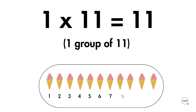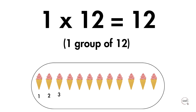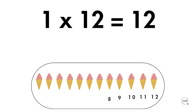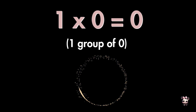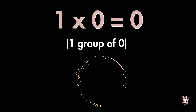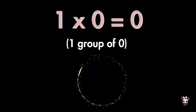1 group of 11 is 11. 1 group of 12 ice creams is 12. 1 group of 0 ice creams is nothing, therefore it is zero.